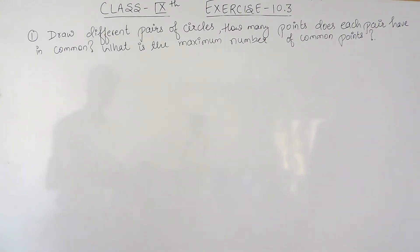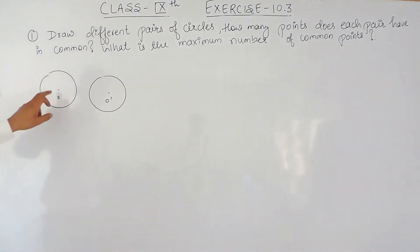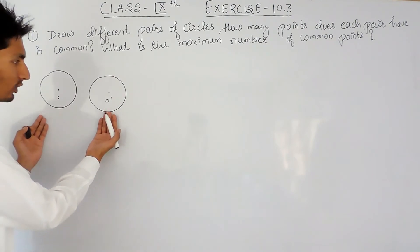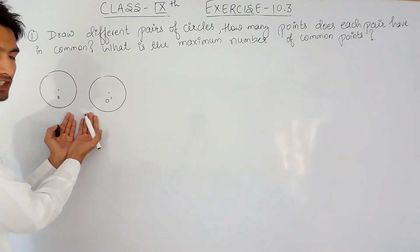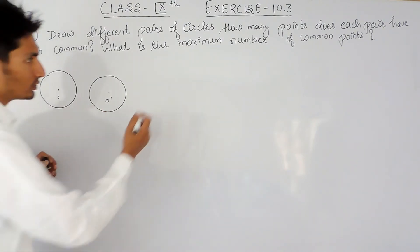So if I draw two circles with centers O and O', obviously these two circles do not have any common point because they cannot have a common point until they meet each other, or you can say until they touch each other.